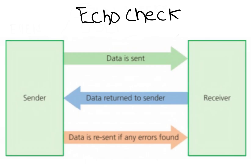However, if no errors occurred, then it is another way to check that the data has been transmitted correctly. In summary, a copy of data is sent back to the sender. The return data is compared with the original data by the sender's computer. If there are no differences, then the data was sent without error. If the two sets of data are different, then an error occurred at some stage during the data transmission.